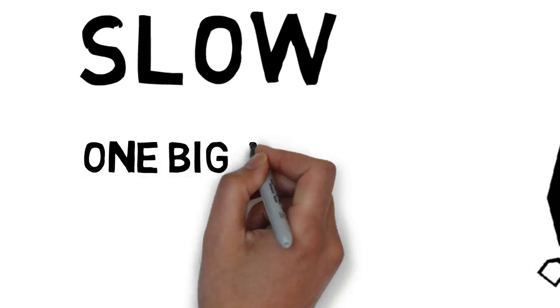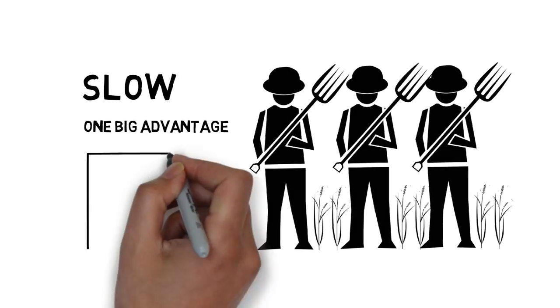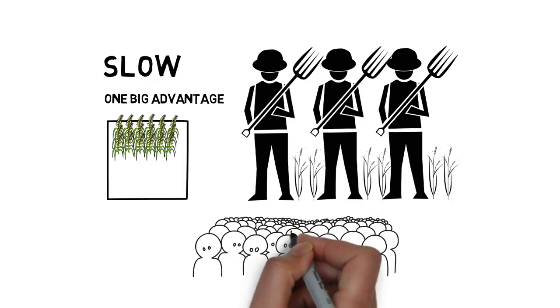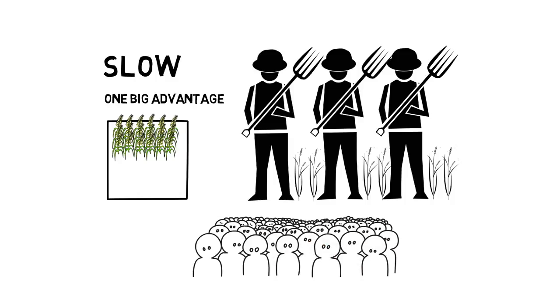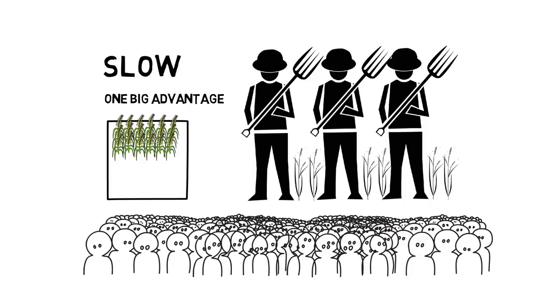Second, despite its many faults, agriculture has one big advantage: it was far more efficient. On just a small patch of land, farmers could grow a massive amount of edible plants. This increased definitive food supply meant that human societies could sustain much higher populations, and thus population exploded. But the increase in population created a problem.